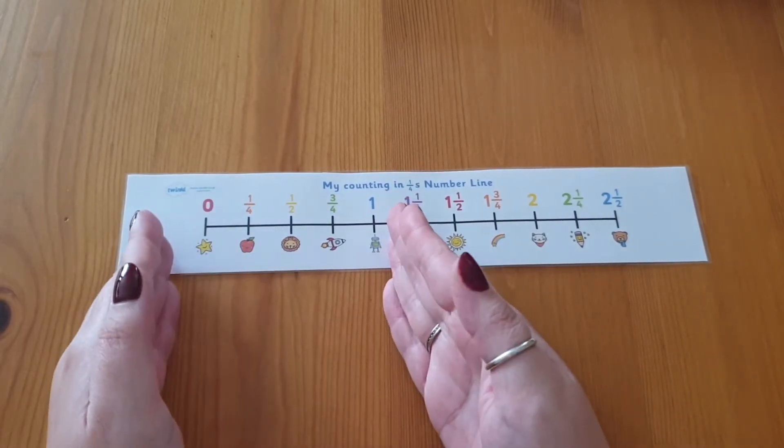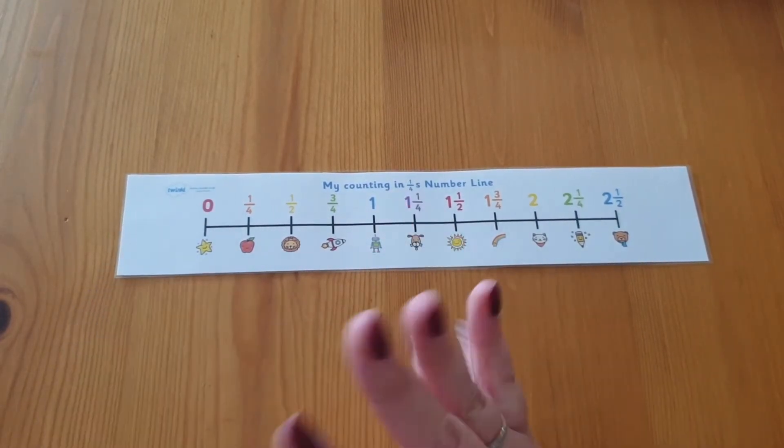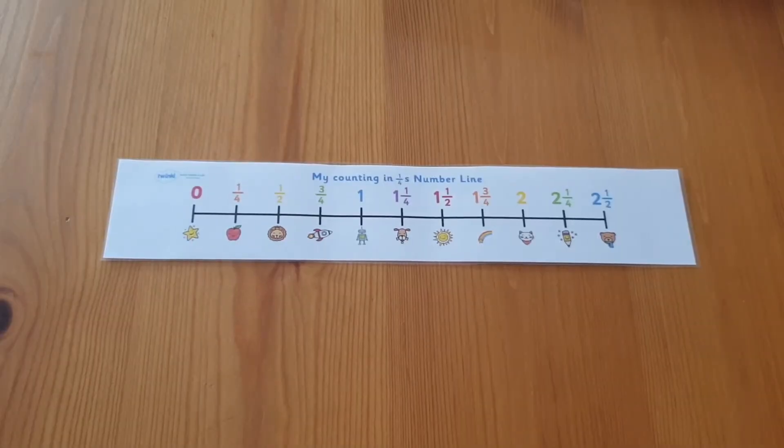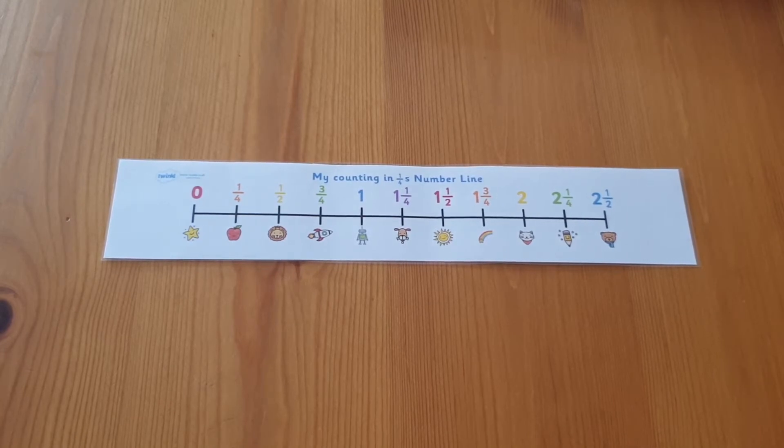Also, they help to see fractions as part of a whole, part of a set, or part of a distance. This fraction number line shows quarters. Having this available when learning about quarters is a great way to learn the pattern.